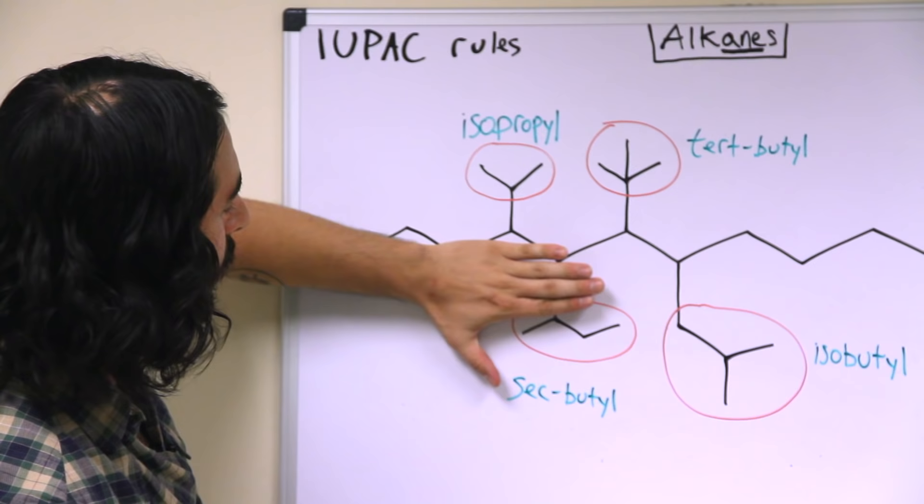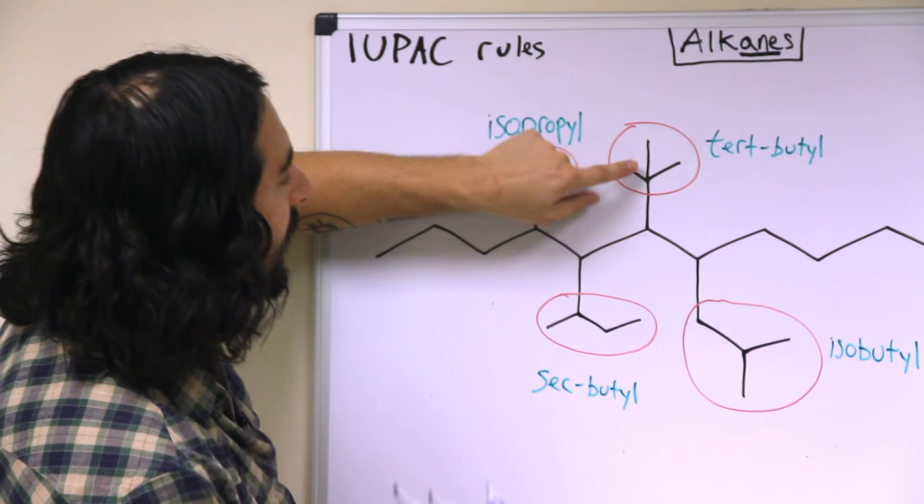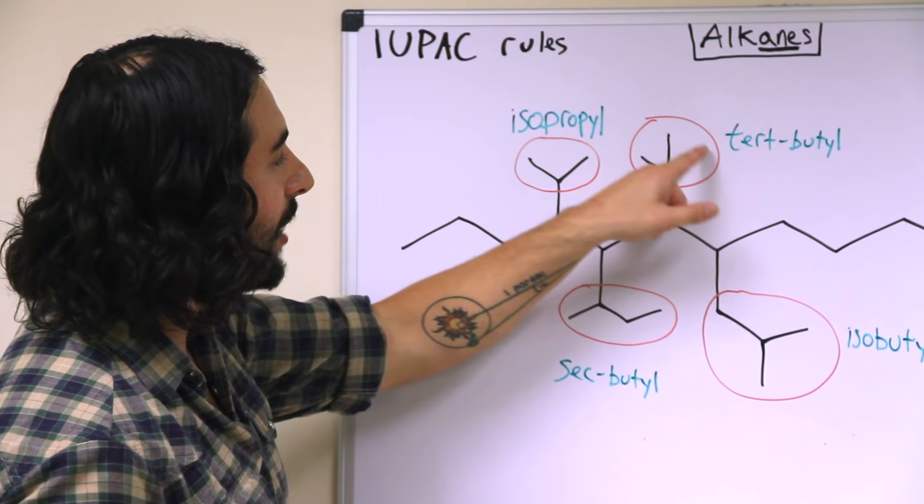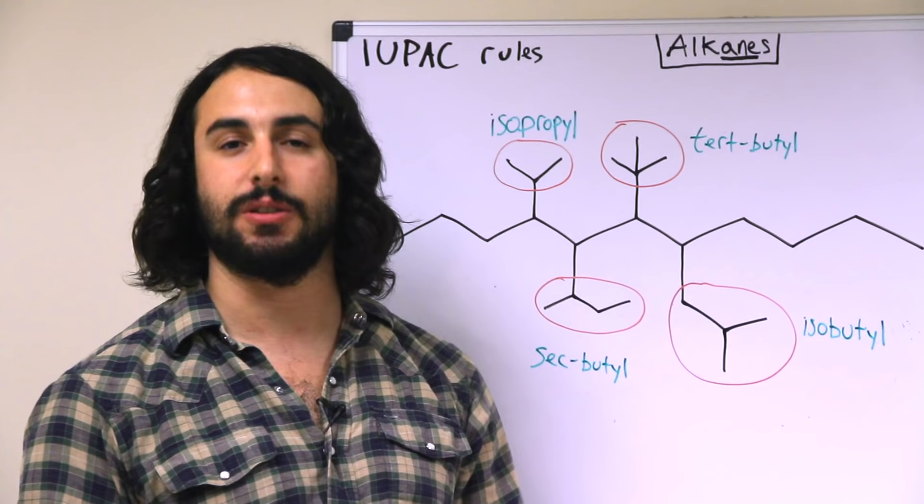Now the names sec and tert come from the fact that if you were to remove this from the main chain, you would see that it is a secondary carbon that is attached to the main chain, whereas if you remove this, this carbon here would be a tertiary carbon that is connected to the main chain. Tertiary meaning it is connected to three other carbons here, secondary meaning it is connected to two others. And then the isobutyl group looks like this.